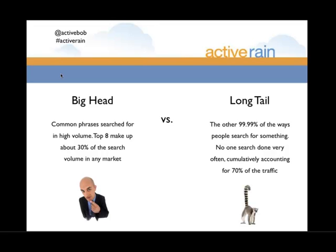On the long tail, this is literally the other ninety-nine-point-nine percent of ways somebody could search for real estate in our market. No single one of those searches is done very often — there are thousands and thousands of different keyword combinations. But the cumulative traffic from all of those long tail searches makes up about seventy percent of total search traffic, which is a lot.